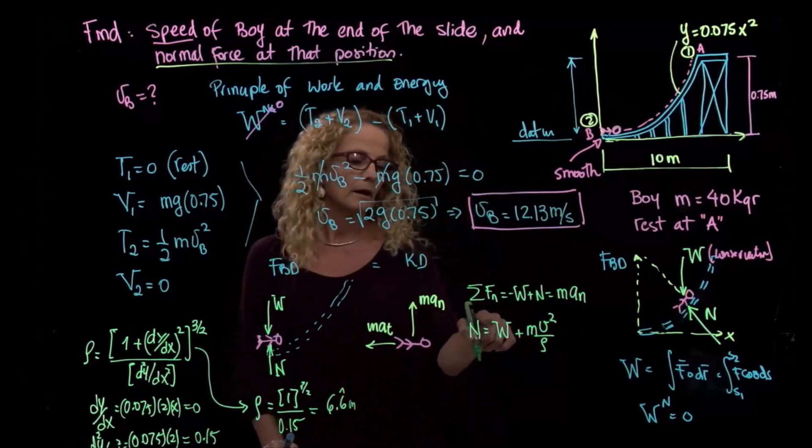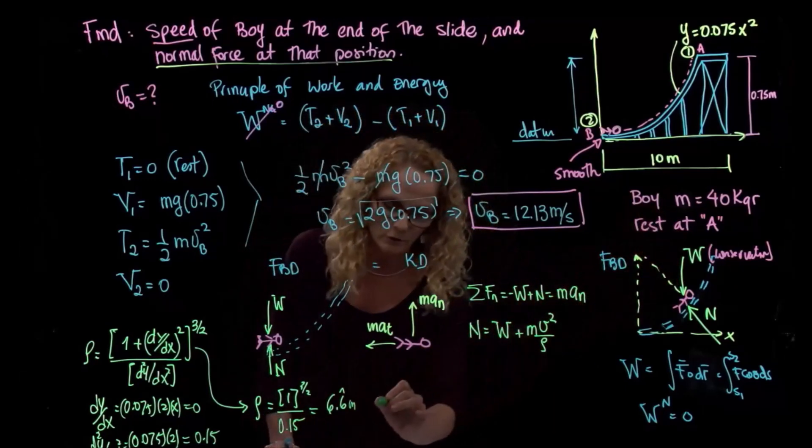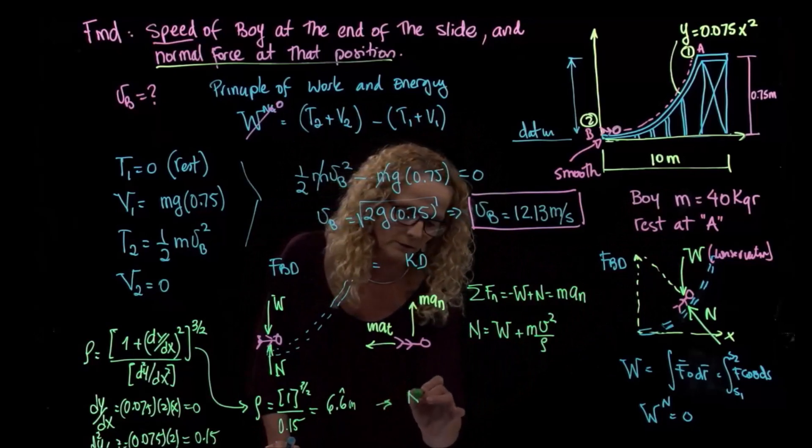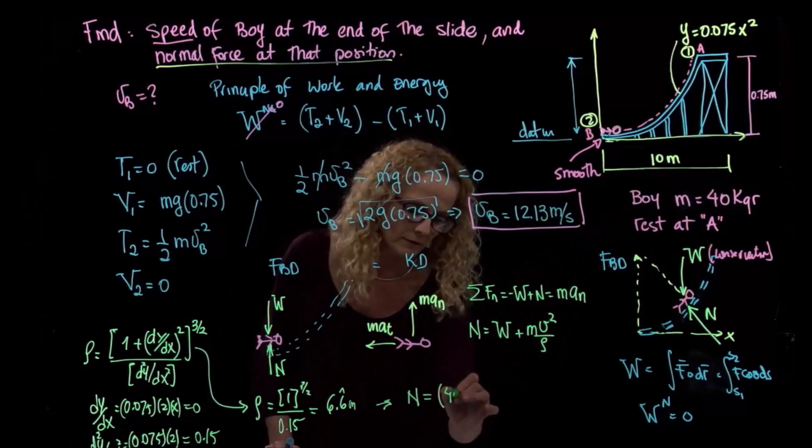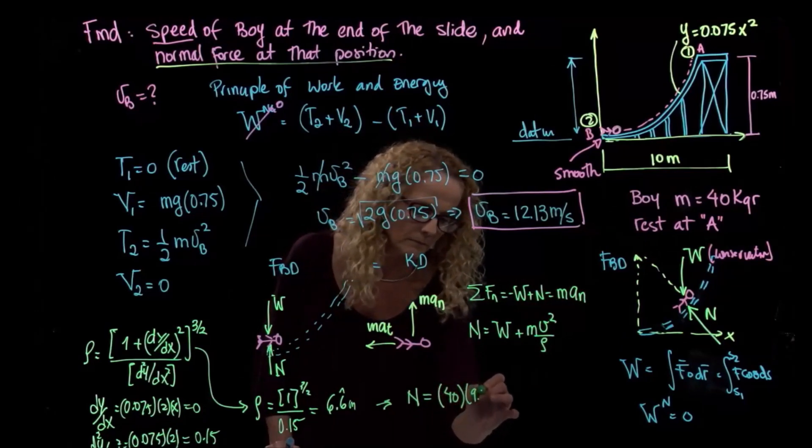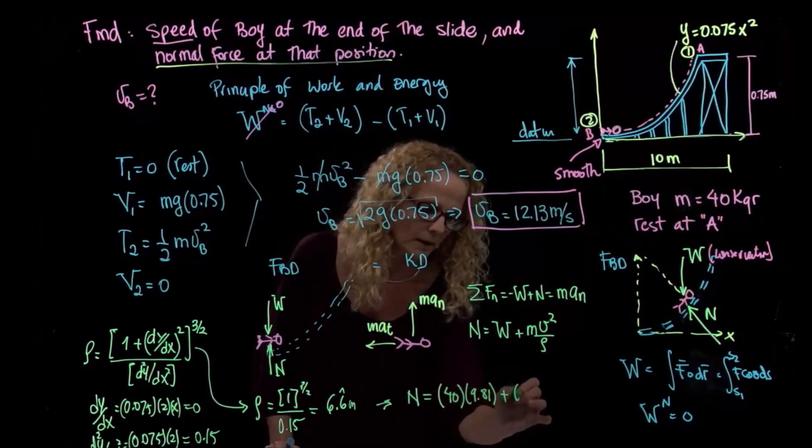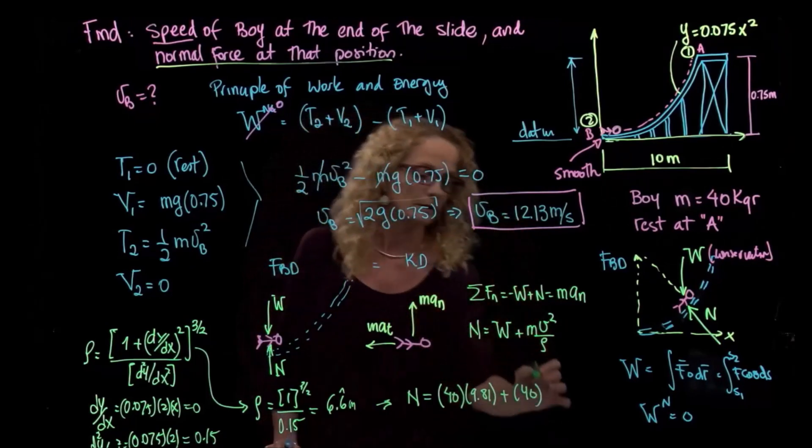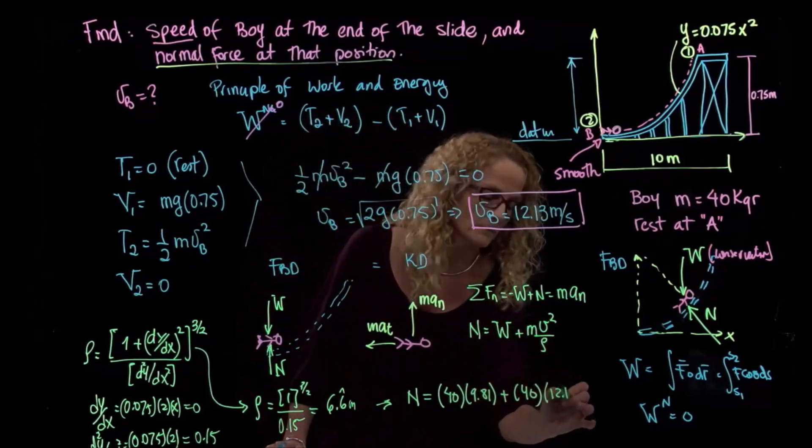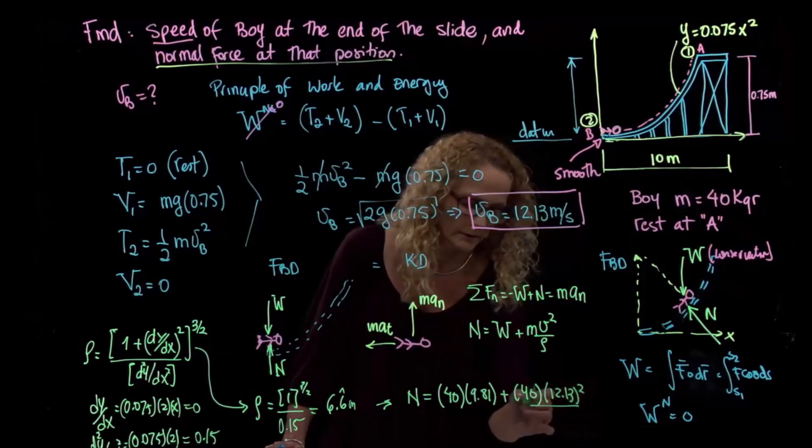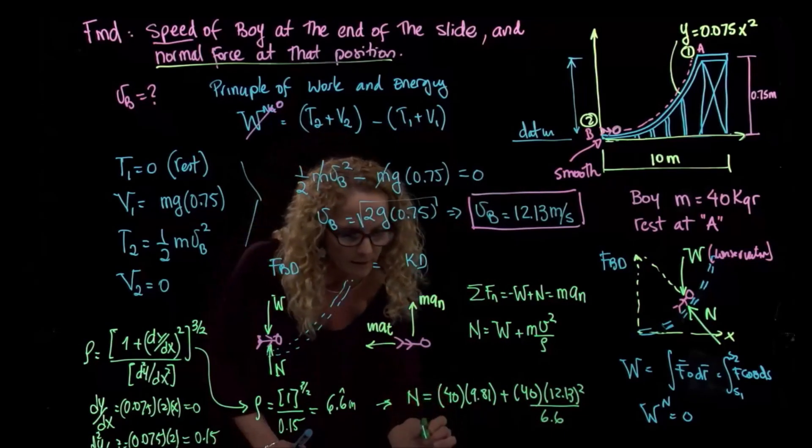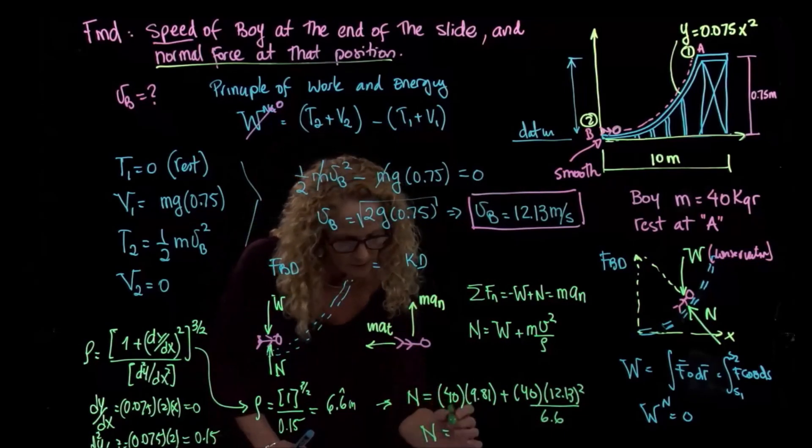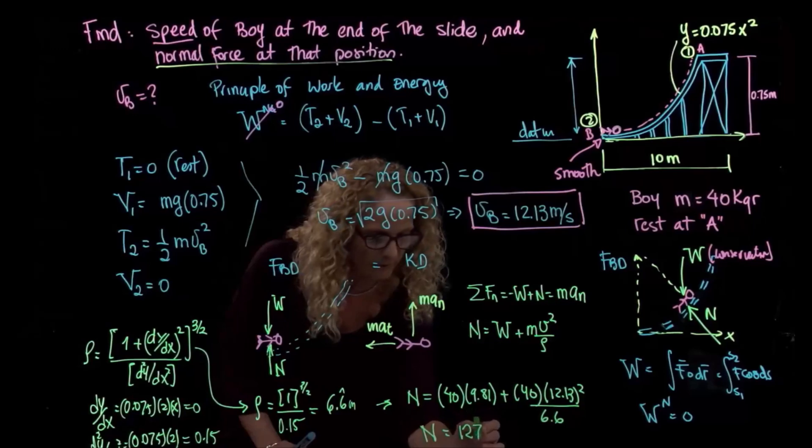So from here, I get that the normal force is equal to mass times gravity plus mass times the velocity that I just found over radius of curvature. And solving for that force, I get that the normal force is equal to 1,275.3 newtons.